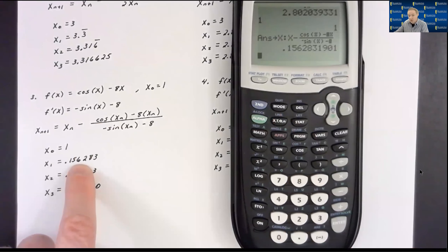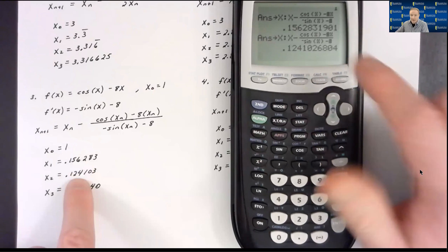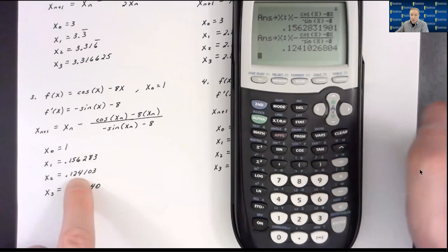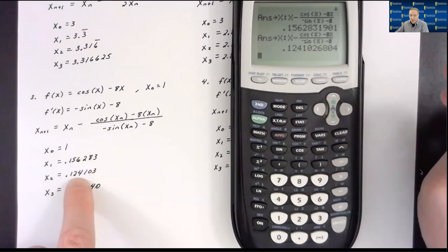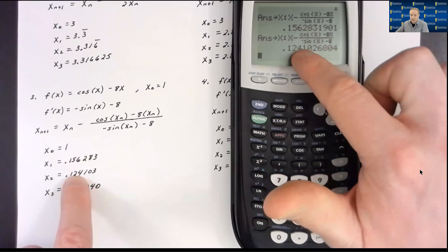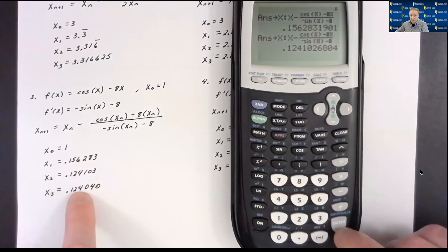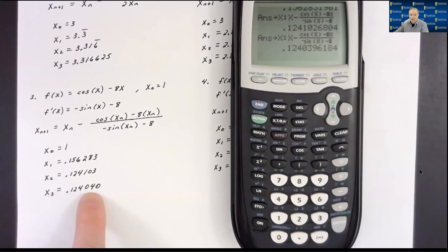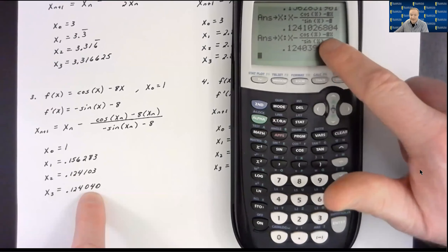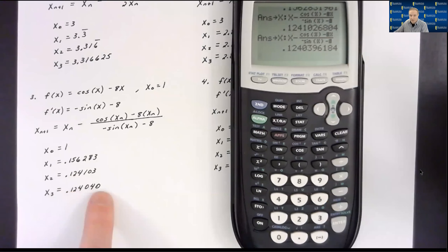The calculator makes it easy — just hit enter to take that stored answer and plug it into the expression. The second refined guess is 0.124103 to six decimal places. It changed much less than before, so we're converging. It changed approximately 0.03, so the next should differ by less than 0.003. The third refined guess is 0.124040 to six decimal places — it didn't change much, confirming convergence. That's Newton's method for that problem.